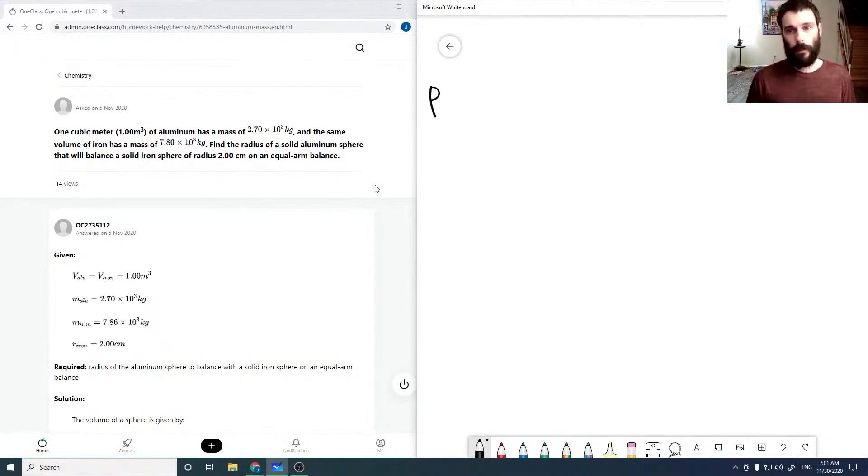So our density of aluminum is 2.70 times 10 to the 3 kilograms over 1 meter cubed. Our density of iron here is 7.86.